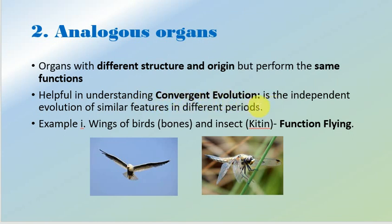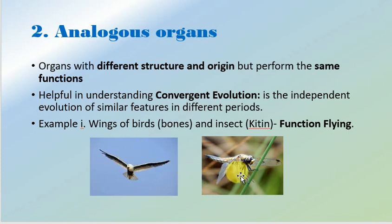Convergent evolution is the independent evolution of similar features in different lineages. The first example is the wings of birds and insects. Both are used for flying, but their origin and structure is dissimilar. The bones are the main component of bird wings, while insect wings are made up of chitin.